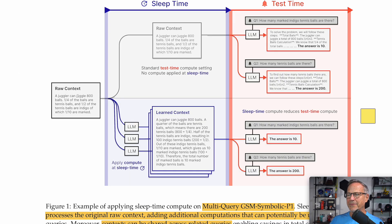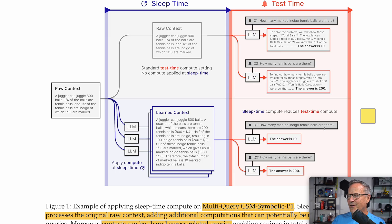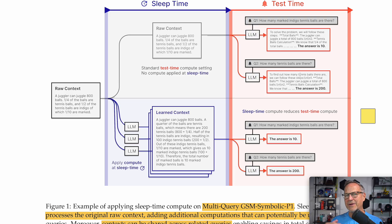They present a nice image that splits this up. Standard test time compute has the context and the question at the same time, and it has to re-ingest the context and think about answers to both related questions. Whereas with sleep time, the model can read the context on its own and generate a bunch of potential answers, so that when the person asks 'how many marked indigo tennis balls are there?' it already knows the answer is 10. And for a second related question — 'how many tennis balls are there?' — it already knows the answer is 200.